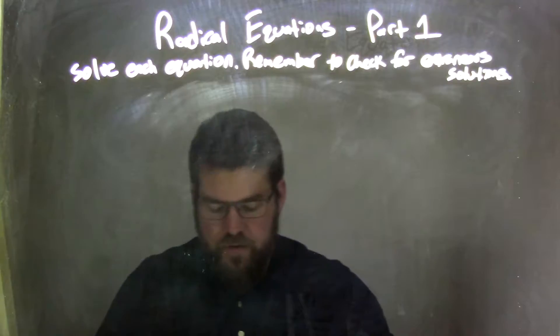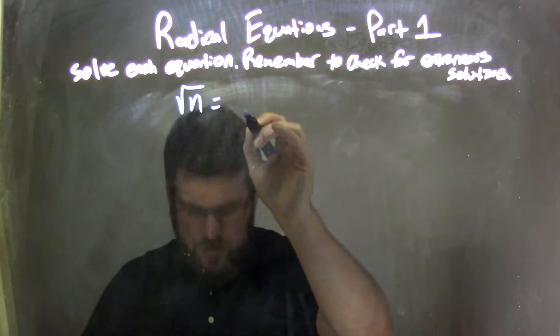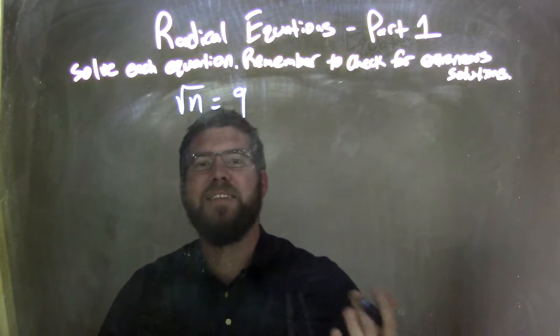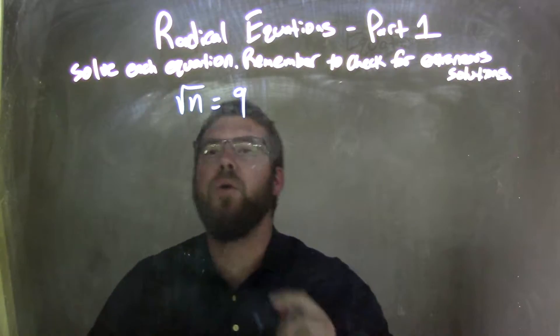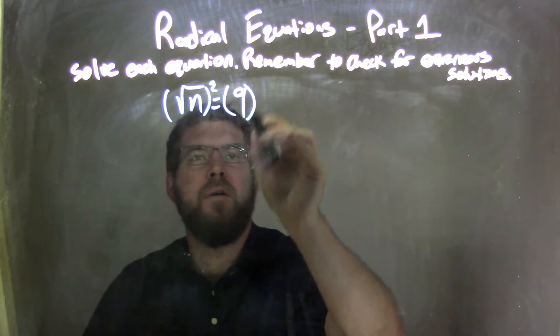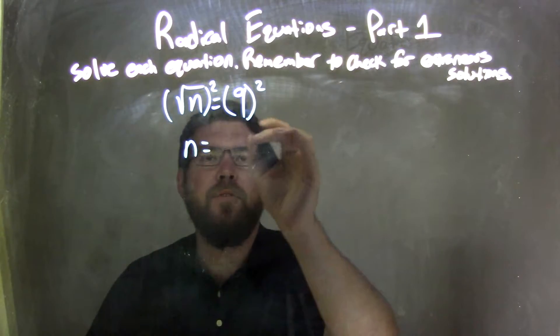So, I'm given this equation. The square root of n equals 9. Well, my first step is to eliminate the square root by squaring both sides. So, to do that, I square both sides here. Leaving me with just n on the left, which eliminates that square root, equals 9 squared, which is 81.